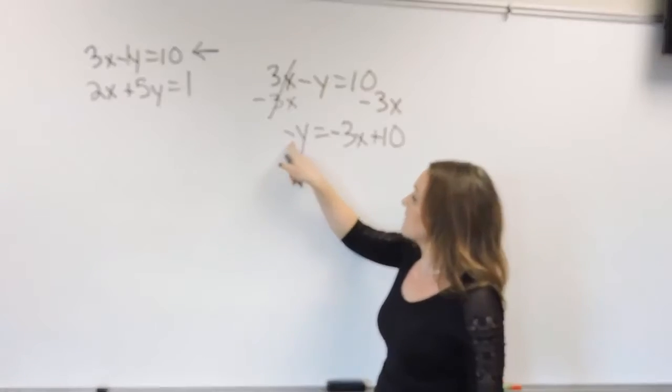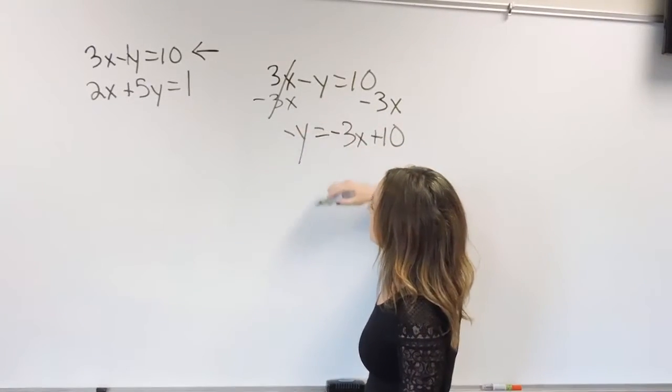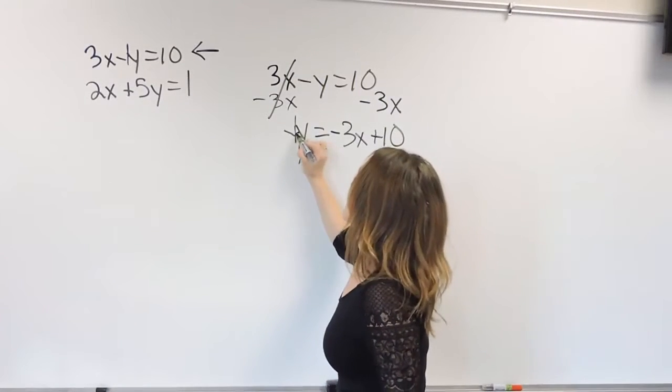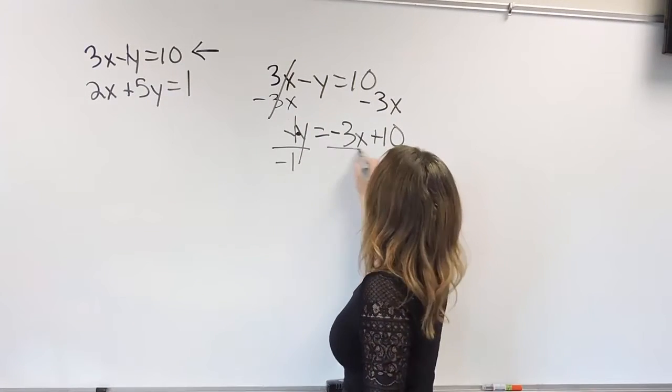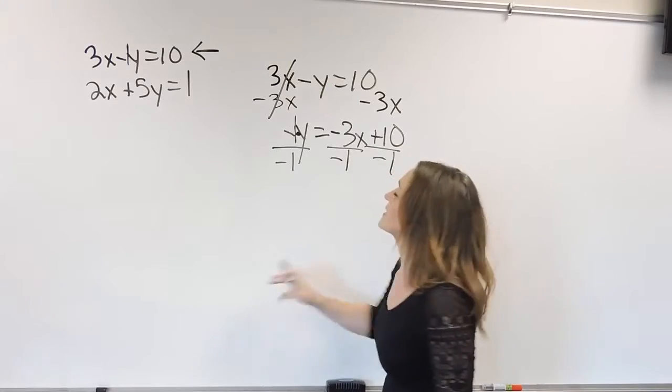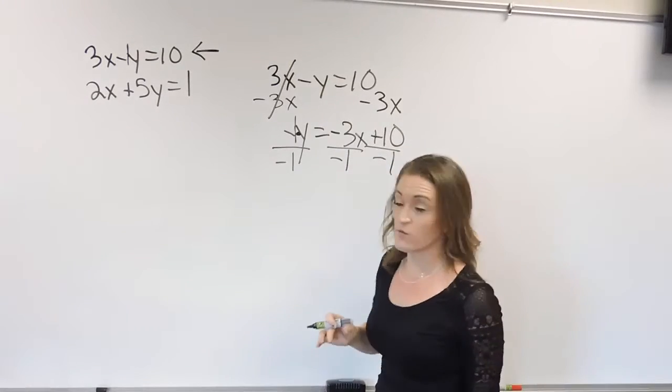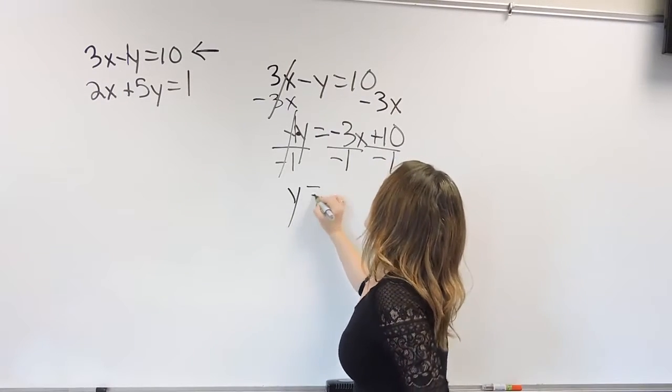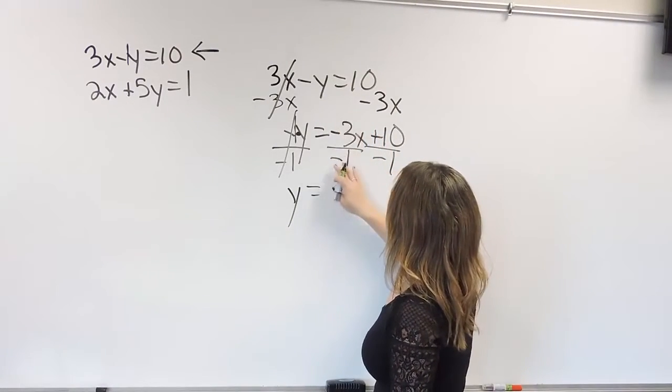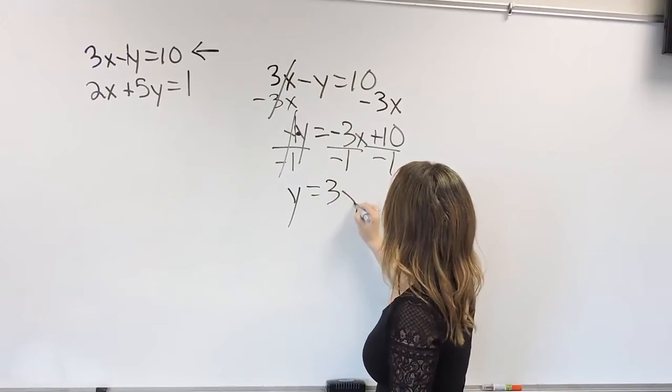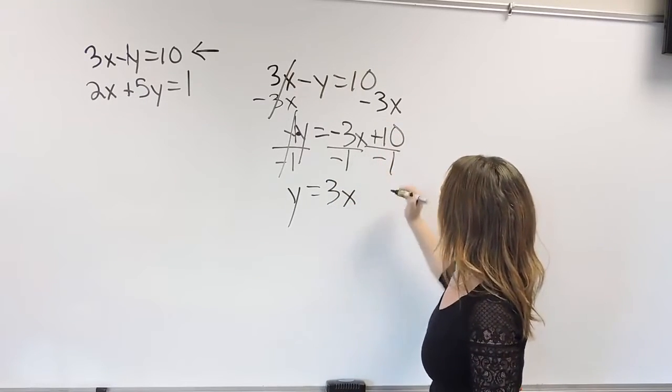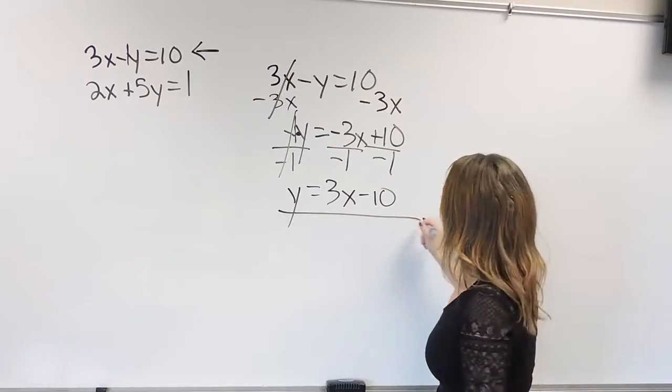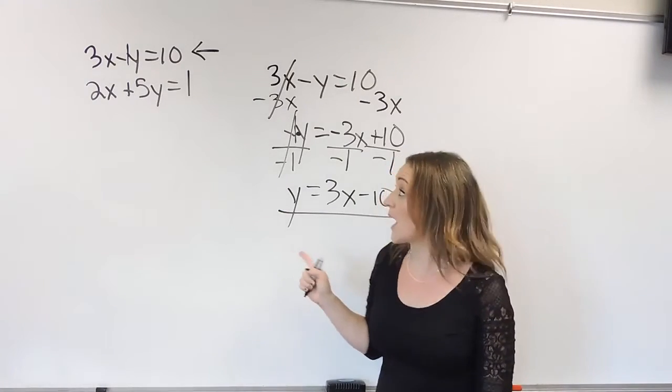Now we almost have it solved. We have this negative 1 in front here, so remember that it's understood to be a negative 1, and that's negative 1 times y. So we need to get rid of it by dividing everything by negative 1. Negative 1 over negative 1 cancels, and we drop down y is equal to positive, I mean negative over negative is a positive 3x. Positive over negative there gives us a negative 10. So now we have this equation solved for y.